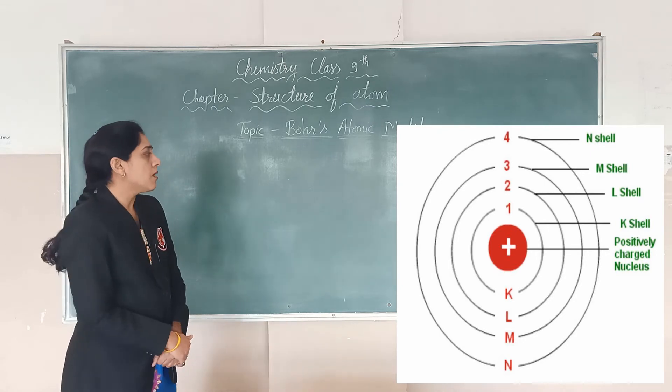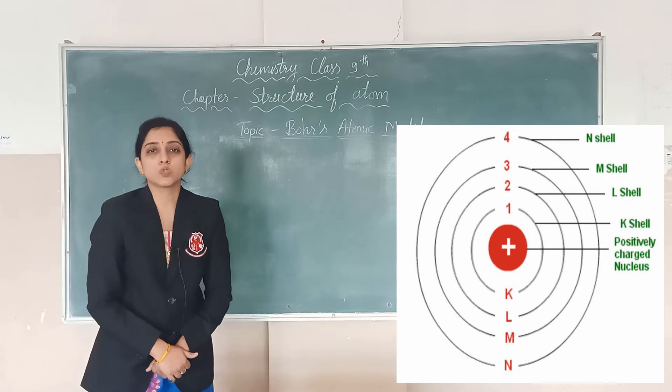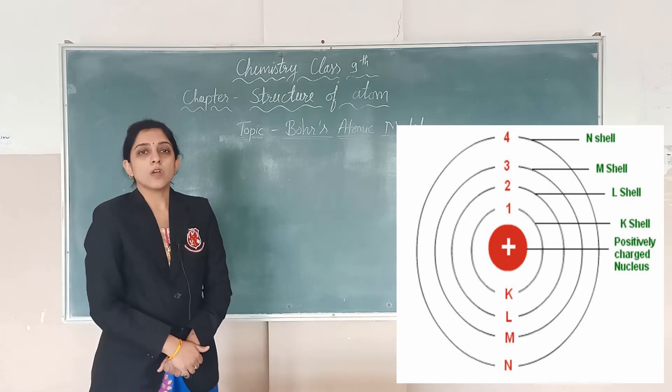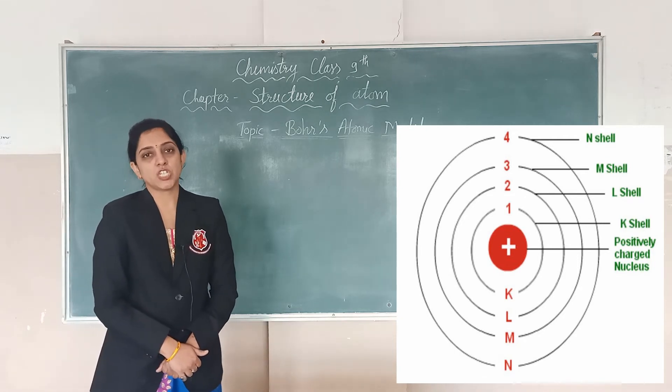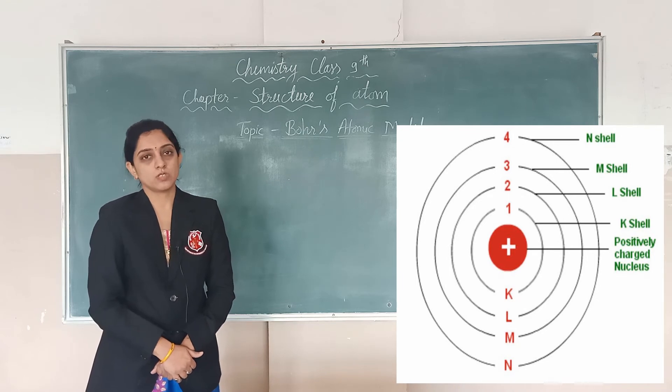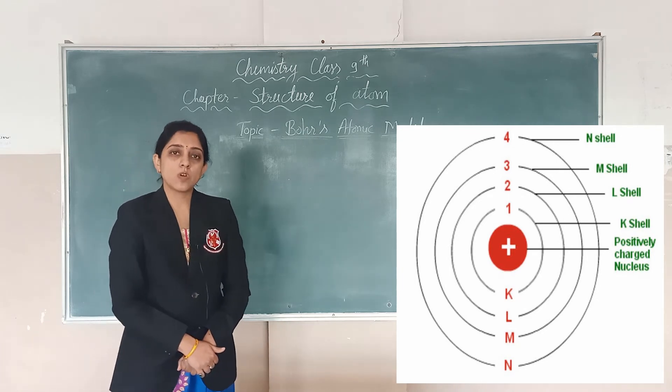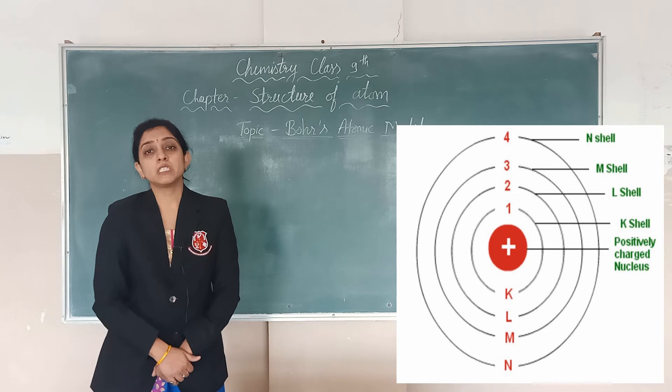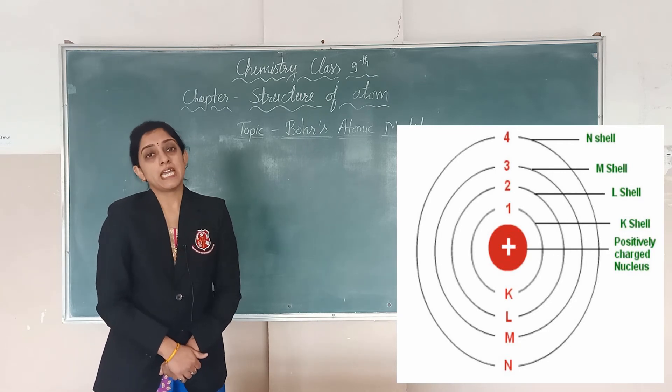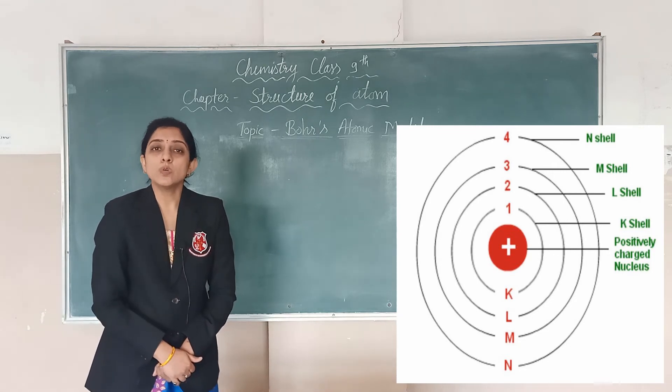Now, the number of electrons are distributed according to 2n² formula and according to this, the first shell, K shell, can hold only 2 electrons. Then L, 8 electrons, M can accommodate maximum 18 electrons and N can accommodate 32 electrons.